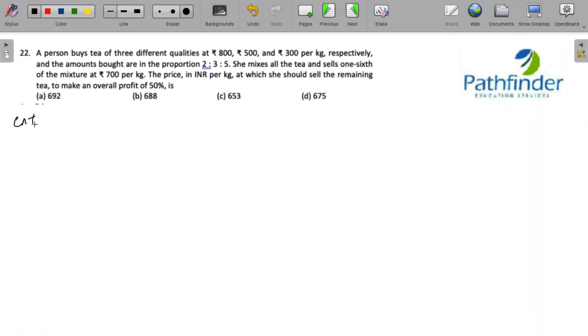CAT 2021 slot 2 question number 22 quantitative aptitude. A person buys tea of three different qualities at rupees 800, 500 and 300 per kg respectively, and the amounts brought are in the ratio of 2 to 3 to 5.